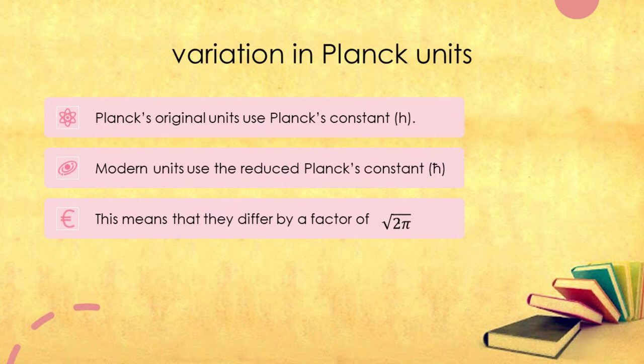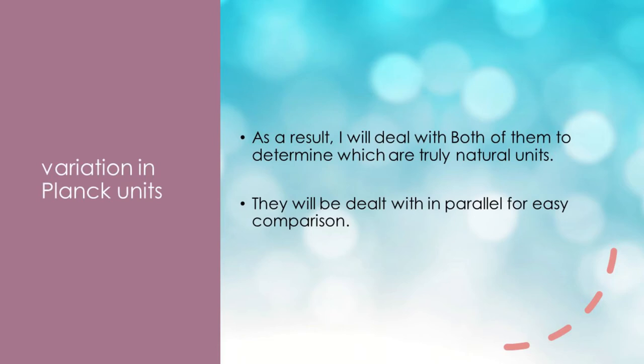It turns out that there are two variations of Planck units. Planck's original units used Planck's constant, while the modern units use the reduced Planck's constant. This means that they differ by a factor of the square root of 2π. I will deal with both of them in parallel to determine which are truly natural units.